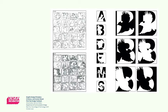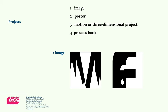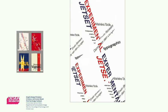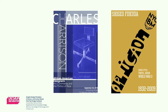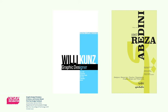Understanding comes from reflecting on those decisions and alternate possibilities. Our course builds through four projects: an image, poster, motion or three-dimensional exercise, and a process documentation book. The poster's theme is on a significant design era, contributor, or investigation. It begins with research resulting in the presentation of a curated collection of design influence. Integral to this project is the awareness of the often overlooked influences and lack of diversity in the canon of graphic design.